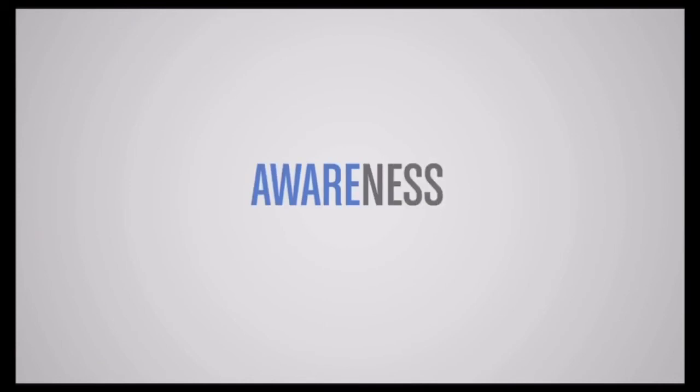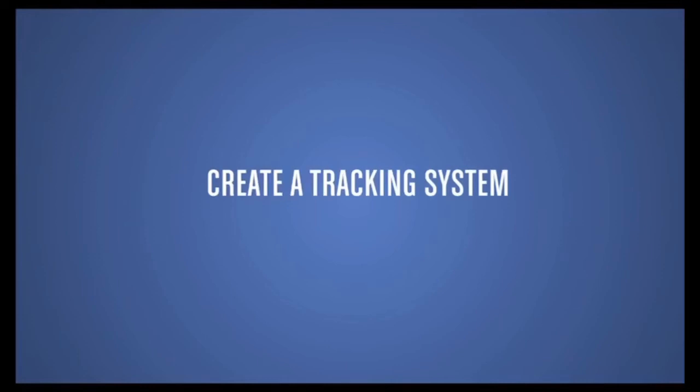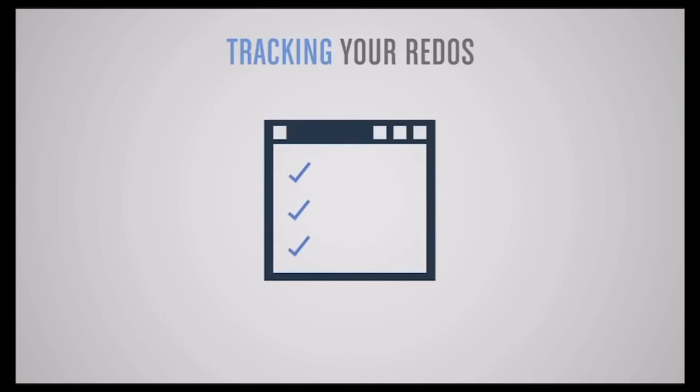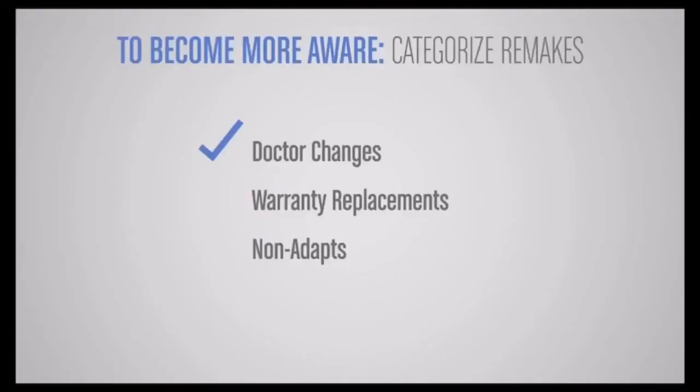Now that you understand the benefits of reducing or preventing redos, the first step is awareness. Tracking all redos might be as simple as hash marks on an index card or a basic spreadsheet. Organizing each remake by categories such as doctor changes, warranty replacements, and non-adapts illustrates which redo category needs the most attention. Take the opportunity to share your results regularly at staff meetings to improve patient satisfaction and practice profitability. Developing a process and following it is the key.